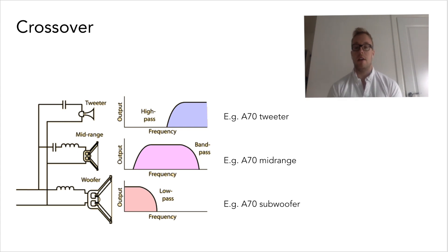So I've put here as an example, the A70 tweeter will be fed from the high pass output of the crossover, the A70 mid-range from the band pass output for the mid-range, and for the subwoofer, you'll be looking at the low pass output or high cut for the subwoofer.